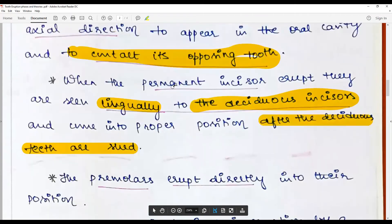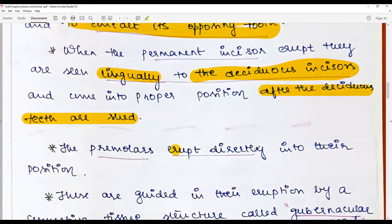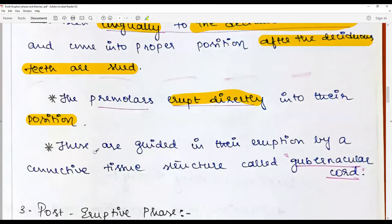The premolars erupt directly, followed by the canines too. The premolars erupt directly into their position because of the presence of flaring roots of the deciduous molars. They are guided into eruption by a connective tissue structure believed to be gubernacular cords.